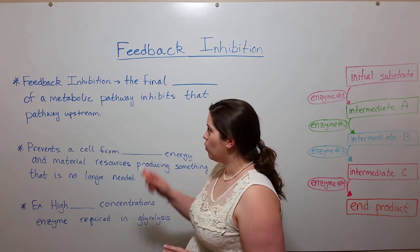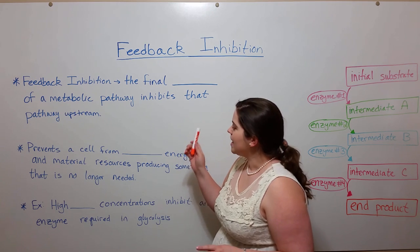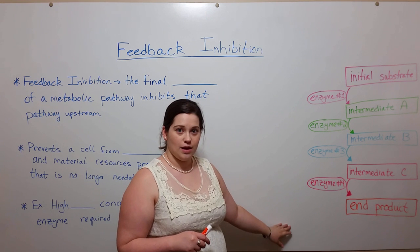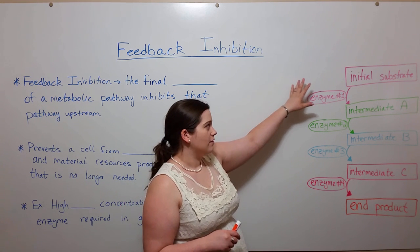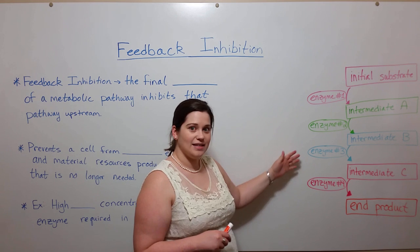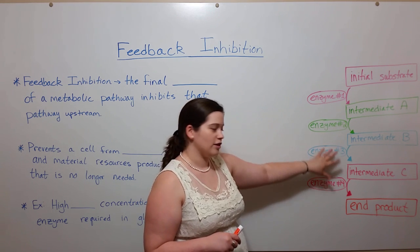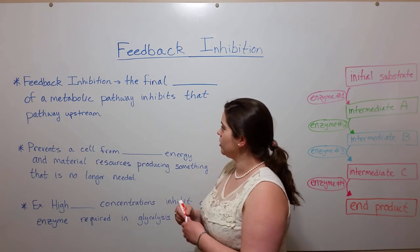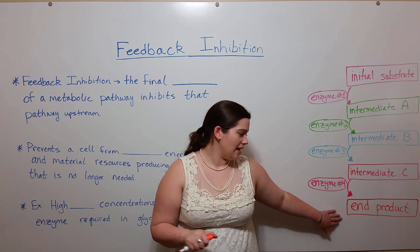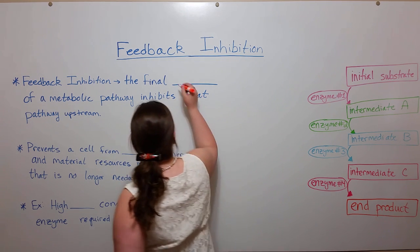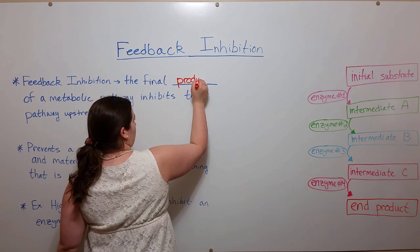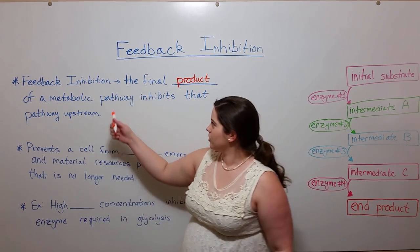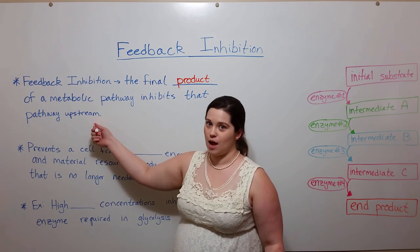First, let's talk about what feedback inhibition is. It is a situation in which you have some kind of metabolic pathway where you have an initial substrate, multiple enzymes that act on multiple intermediates to reach an end product. Feedback inhibition is when that final end product actually inhibits the pathway upstream.